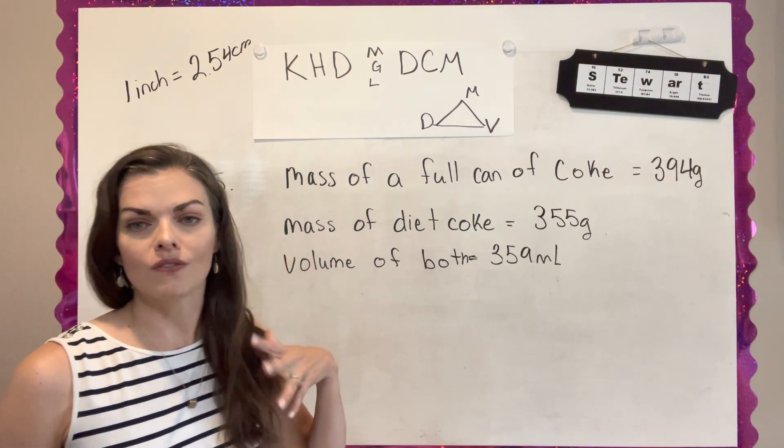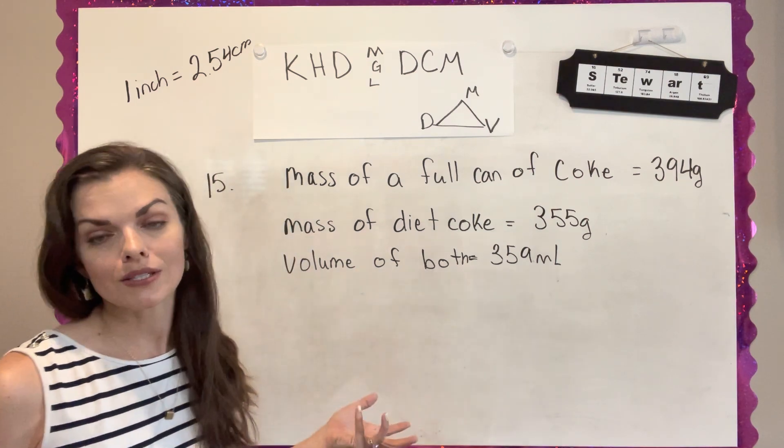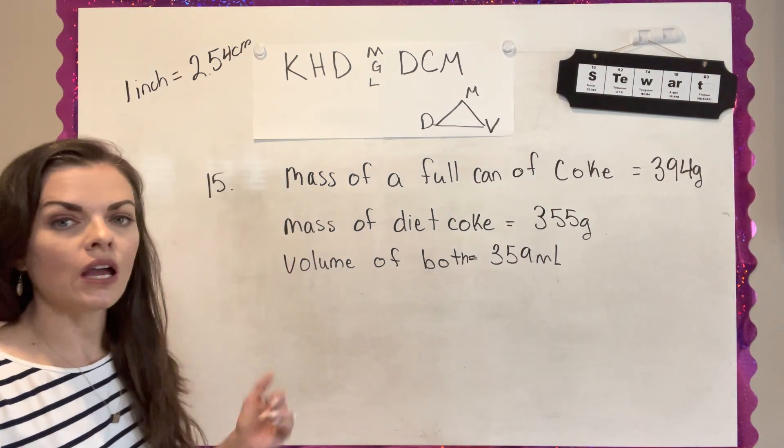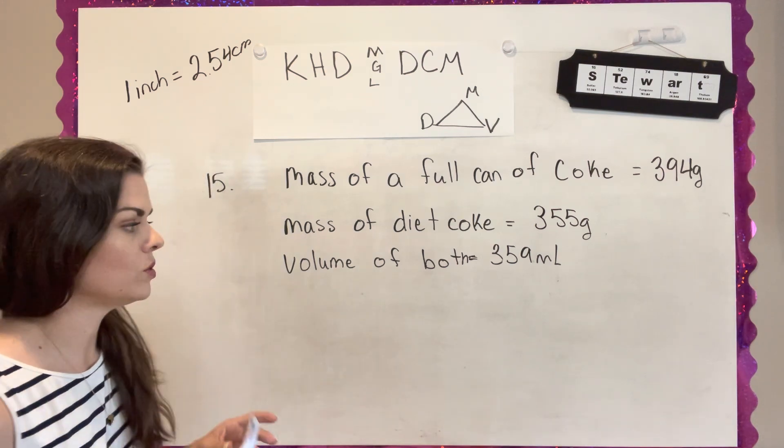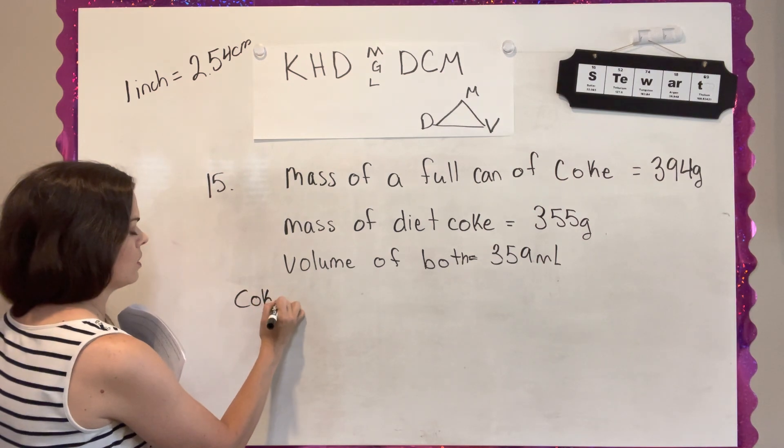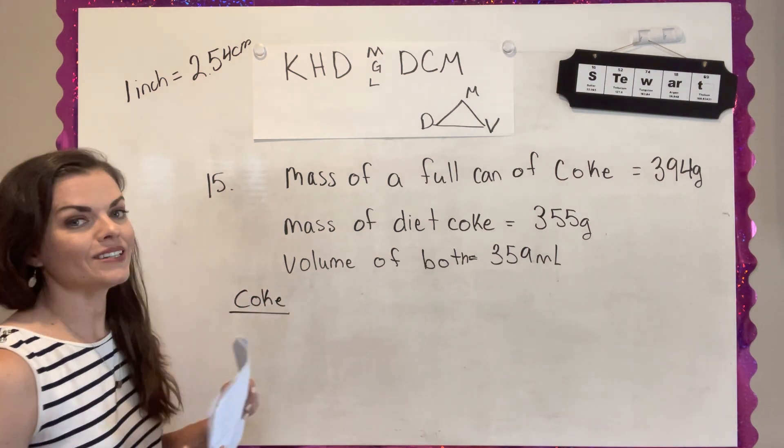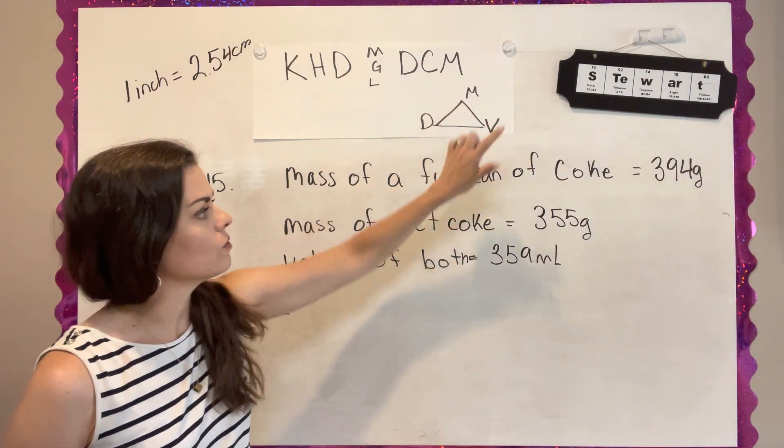And the problem tells you that water has a density of one gram per milliliter. Like this is actually fun. If you have a can of Coke and you have a can of diet Coke to do it and just to see if it works out, but we're going to have to calculate the density of both the Coke and the diet Coke. So I'm going to do the Coke first and density is mass over volume.